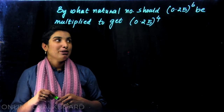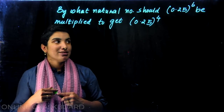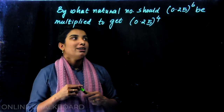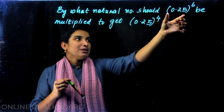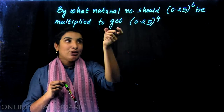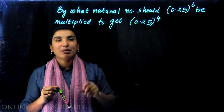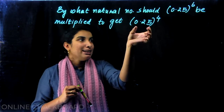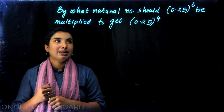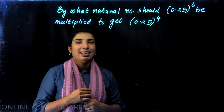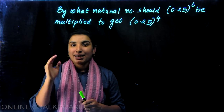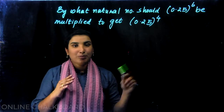By what natural number should 0.25 raised to 6 be multiplied to get 0.25 raised to 4? If we multiply a natural number, we will multiply 0.25 raised to 4. Then we will discuss the natural number. What natural numbers? 1, 2, 3 — we will discuss the counting numbers.